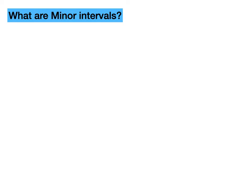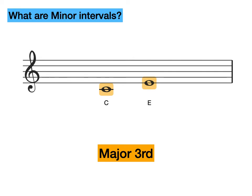But what are minor intervals? Let's look at this major third. This is a major third because E natural is in C major. If we lower the E natural by a semitone to E flat, this now becomes a minor third. A minor interval is one semitone smaller than a major interval. Let's try another example. Here we have C to A. This is a major sixth because A natural is in C major. But if we bring the A down a semitone to A flat, we have now turned this interval into a minor sixth.